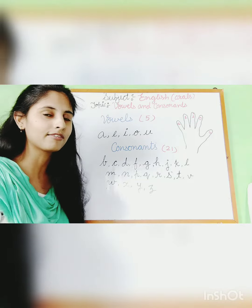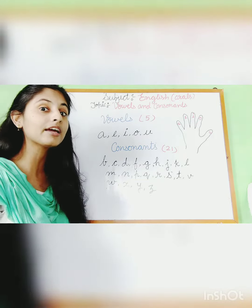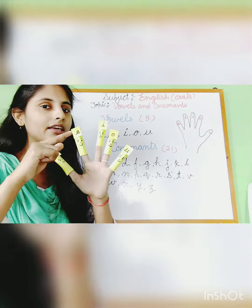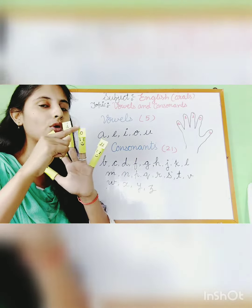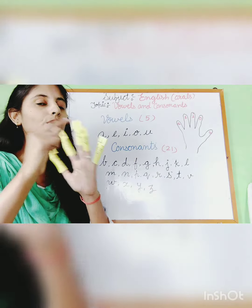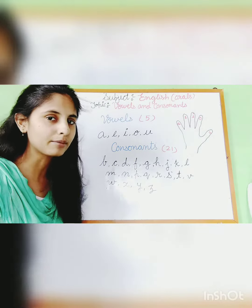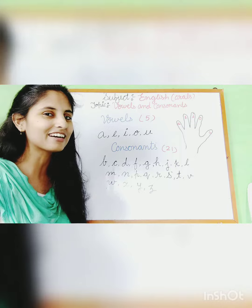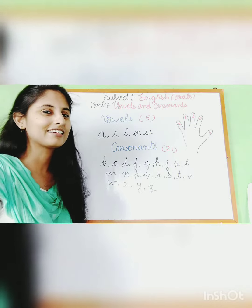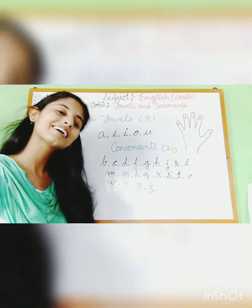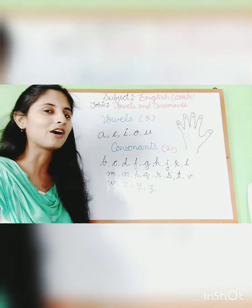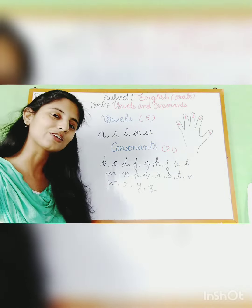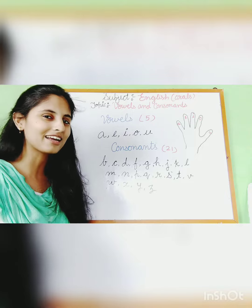So, how many vowels are there? Five — A, E, I, O, U. And how many consonants are there? 21. Dear student, you have finally learned vowels and consonants. Thank you so much. Have a nice day.